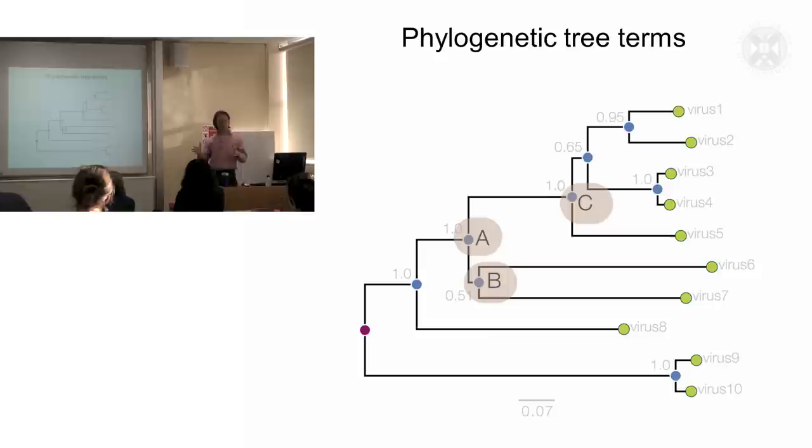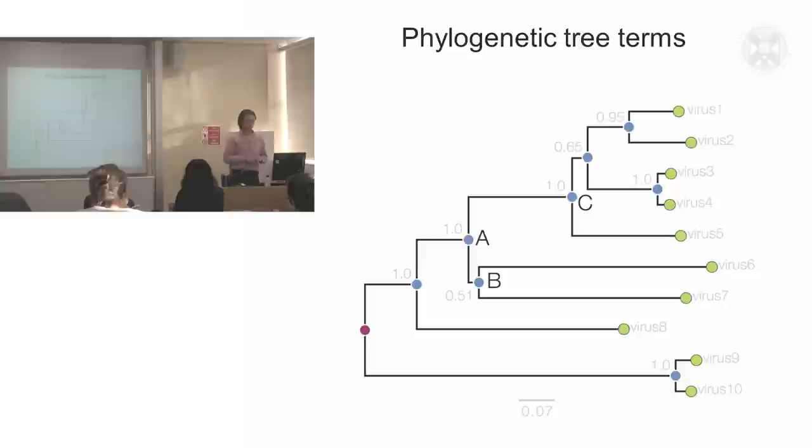So these nodes which are labeled here, A, B and C, because of the fact that this genetic distance is proportional approximately to time, we can say that the ancestral virus, which is indicated by at this node A, existed prior to the virus predicted at B and again prior to that at C. And virus C here is ancestral to all of the viruses represented in this clade here, or this group within the phylogenetic tree.